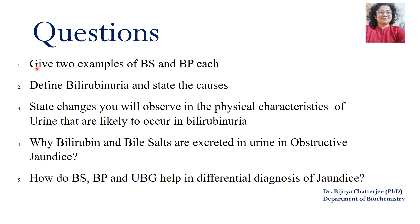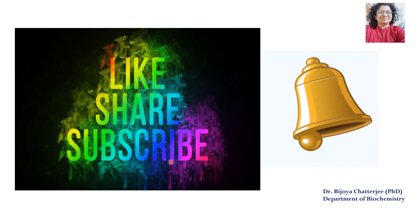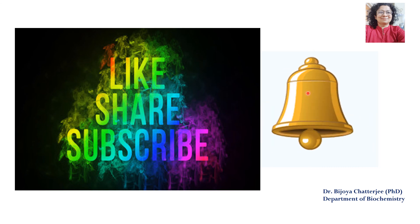Questions: Give two examples of bile salts and bile pigments. Define bilirubinuria and state the causes. State the changes observed in physical characteristics of urine in bilirubinuria. Why are bilirubin and bile salts excreted in urine in obstructive jaundice? How do bile salt, bile pigment, and urobilinogen help in differentiating the diagnosis of jaundice? Please like, share and subscribe to the channel and do not forget to hit the bell icon. Thank you.